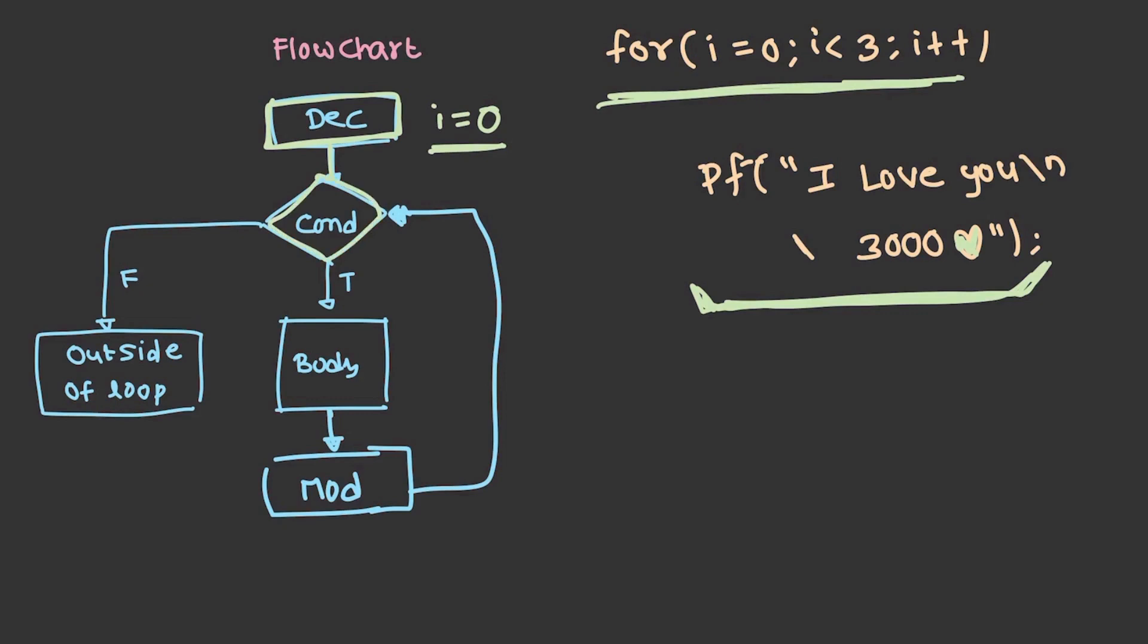Then it is going to the condition. The condition is i less than 3. Whether 0 is less than 3? Yes, it is true. The body has to be executed. This will be printed, so 'I love you 3000' is printed once. After that, modification has to happen - increment the value of i.